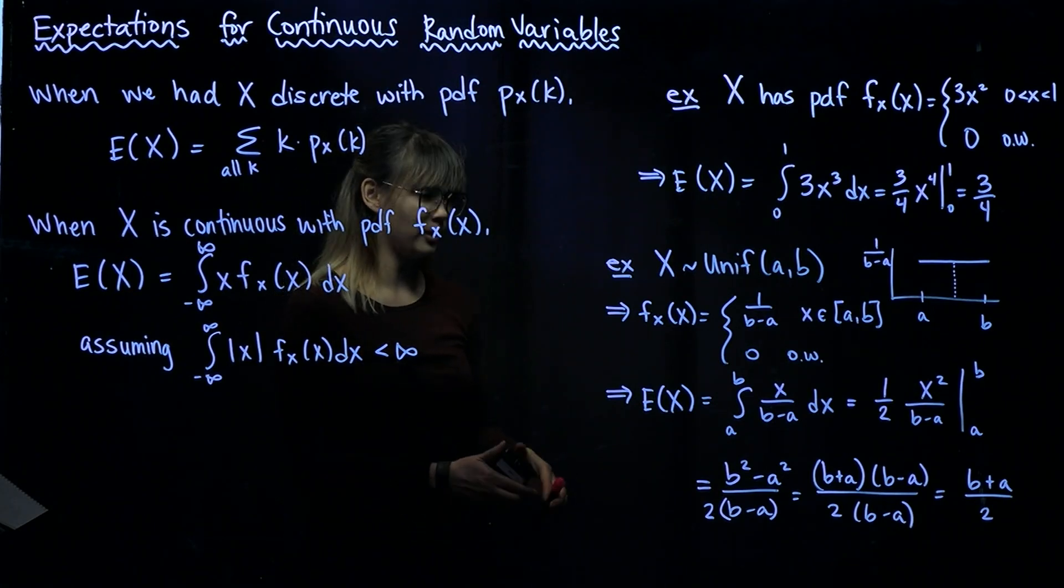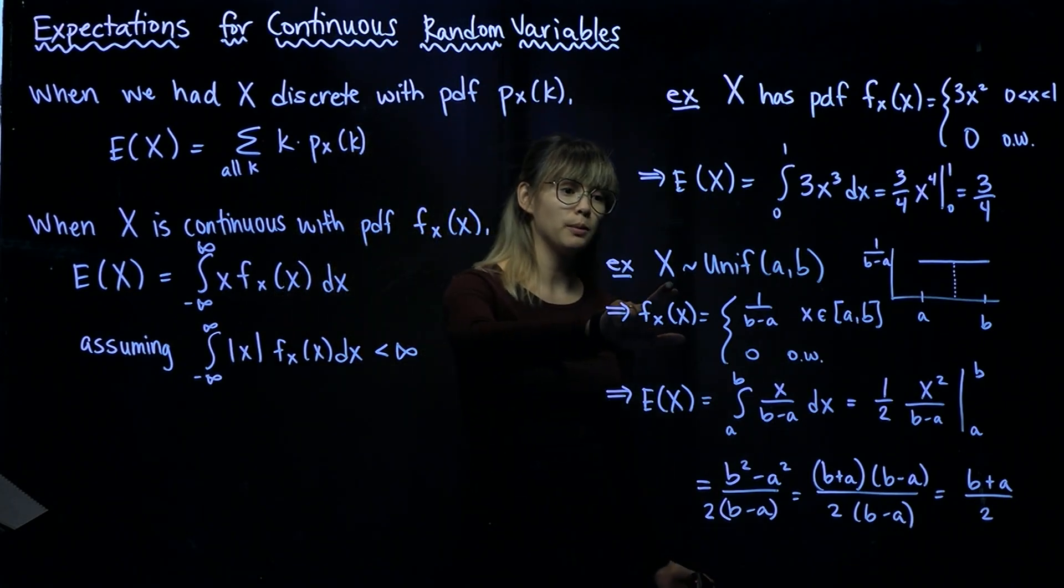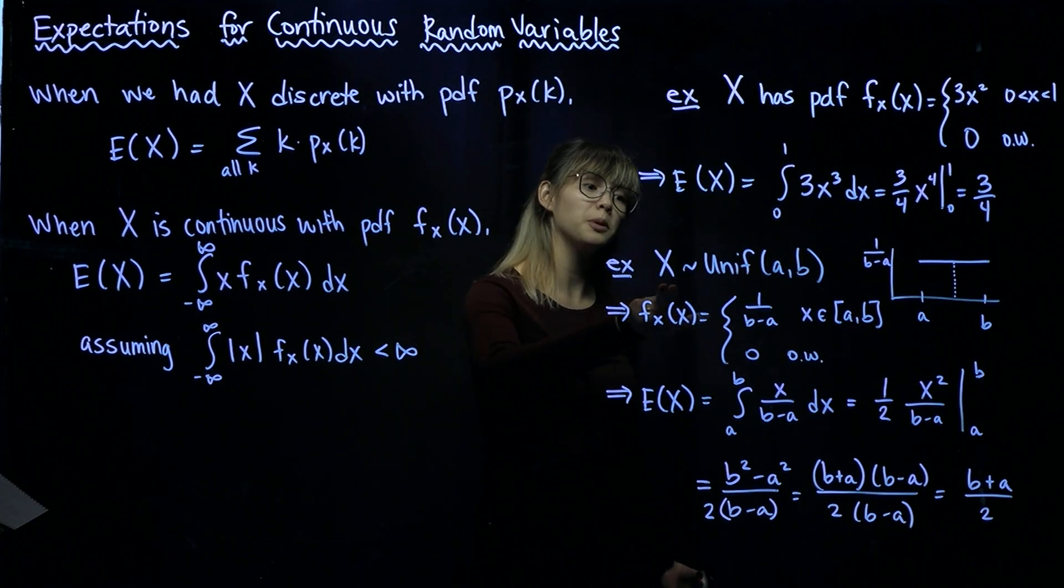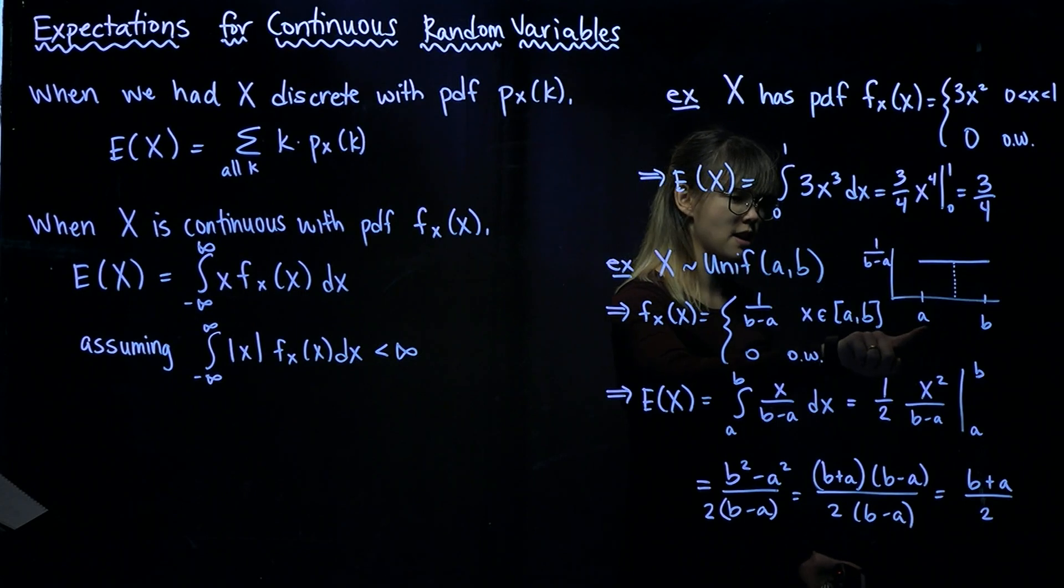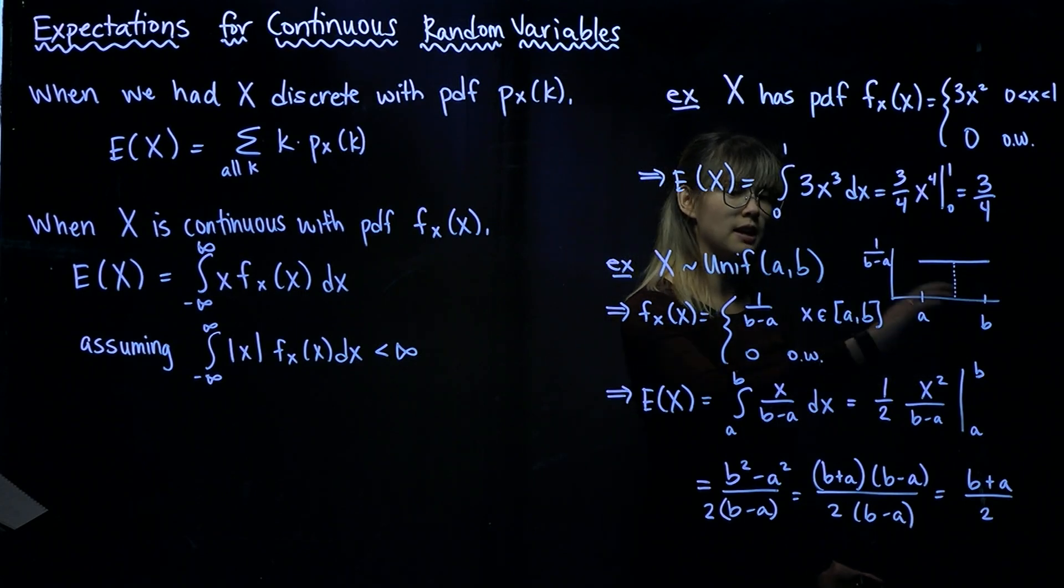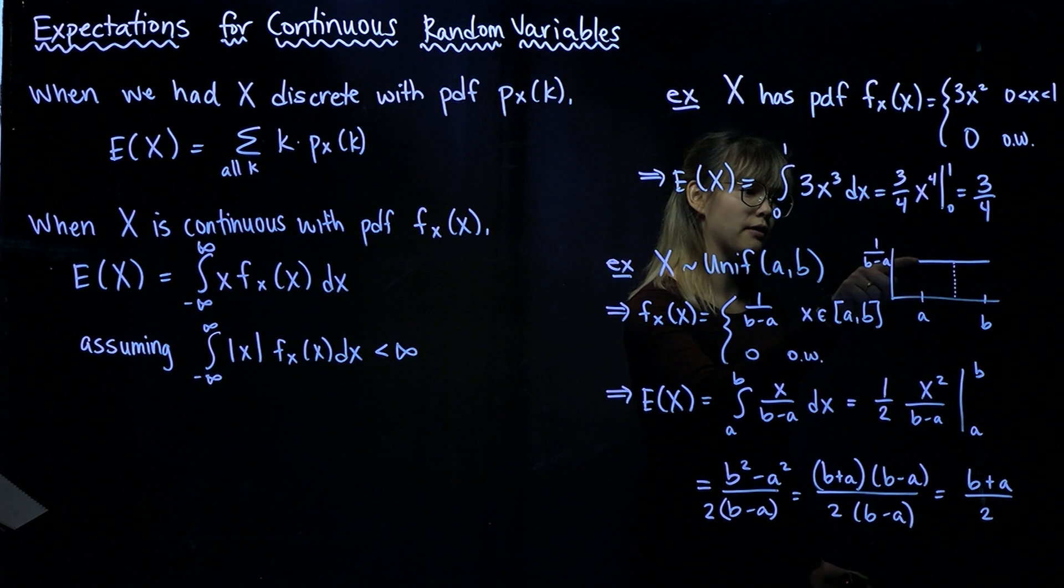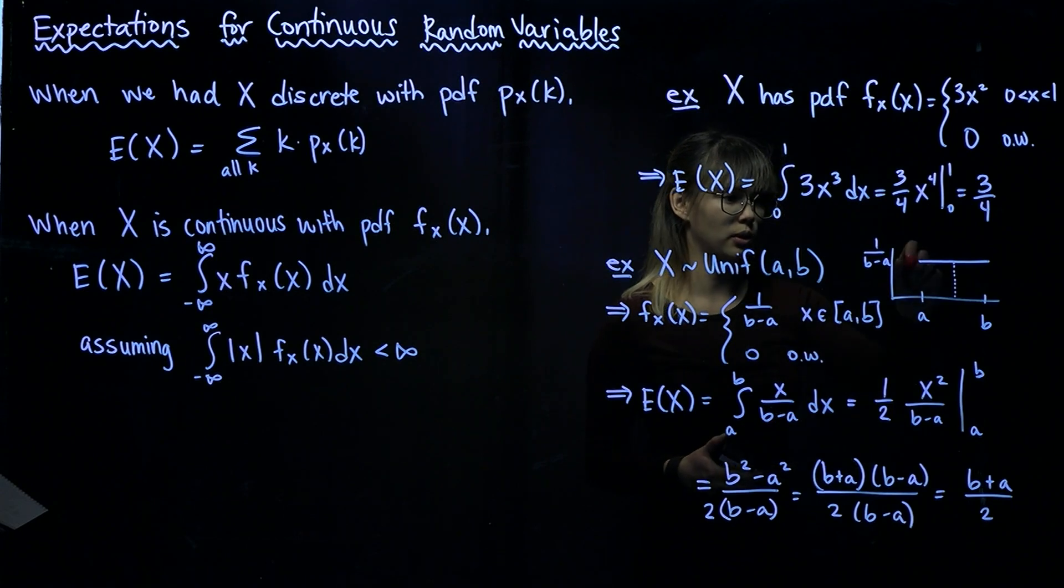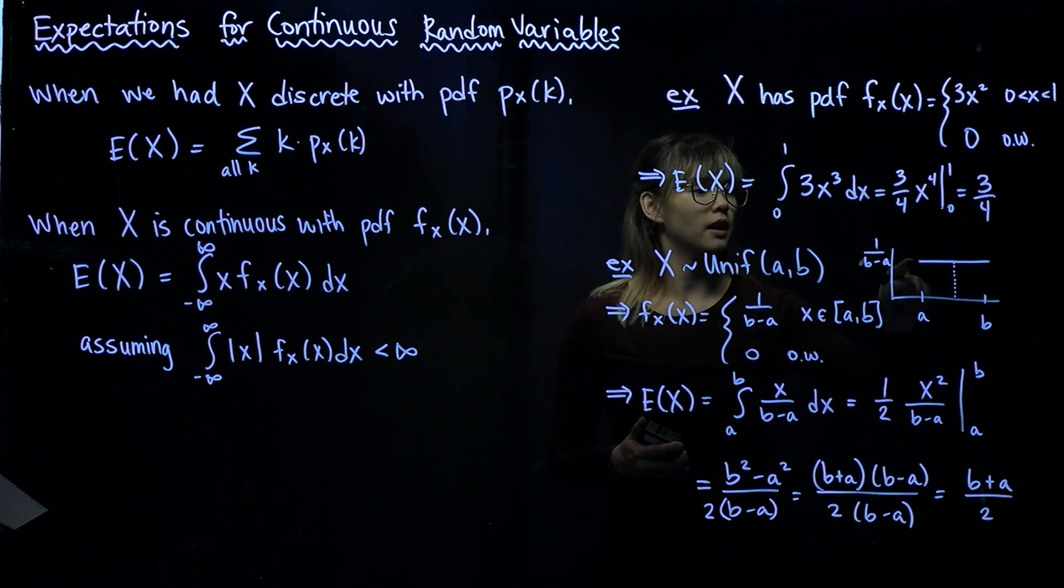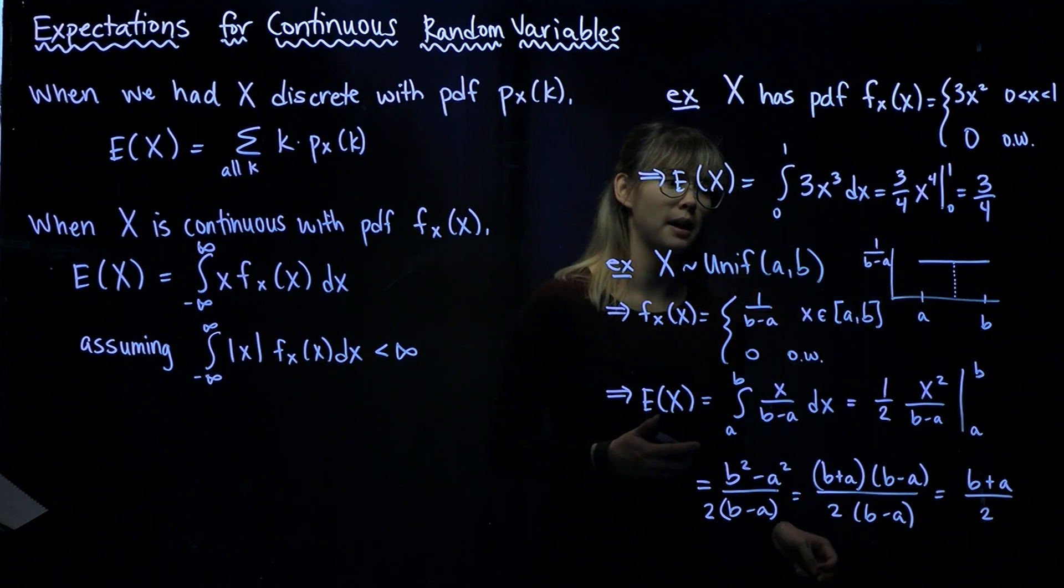All right, next example. X has a uniform distribution. It's uniformly distributed between A and B. So here's a little picture for you. We have the value A, the value B, and X is uniformly distributed, so we're going to have a horizontal line here between A and B. And because we know that this has to integrate to 1, then that means that the height of this is 1 over B minus A.